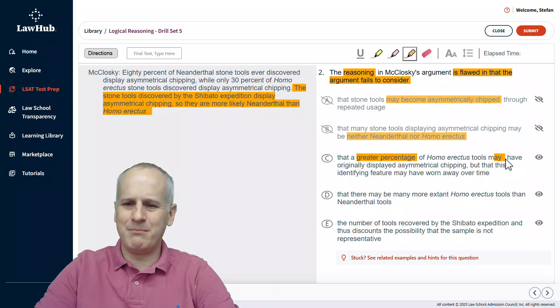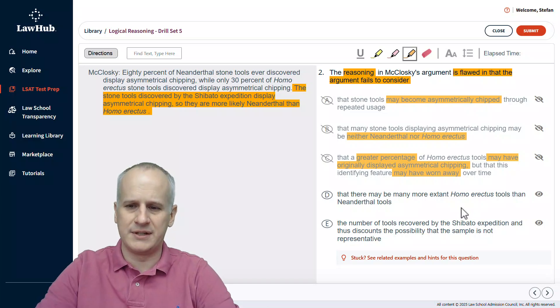Additionally, may have originally displayed asymmetrical chipping. Okay. Did it or did it not. May have worn away over time. Did it or did it not. We've got way too many questions that are left unanswered to apply choice C, so we should be able to eliminate it for any of those reasons.